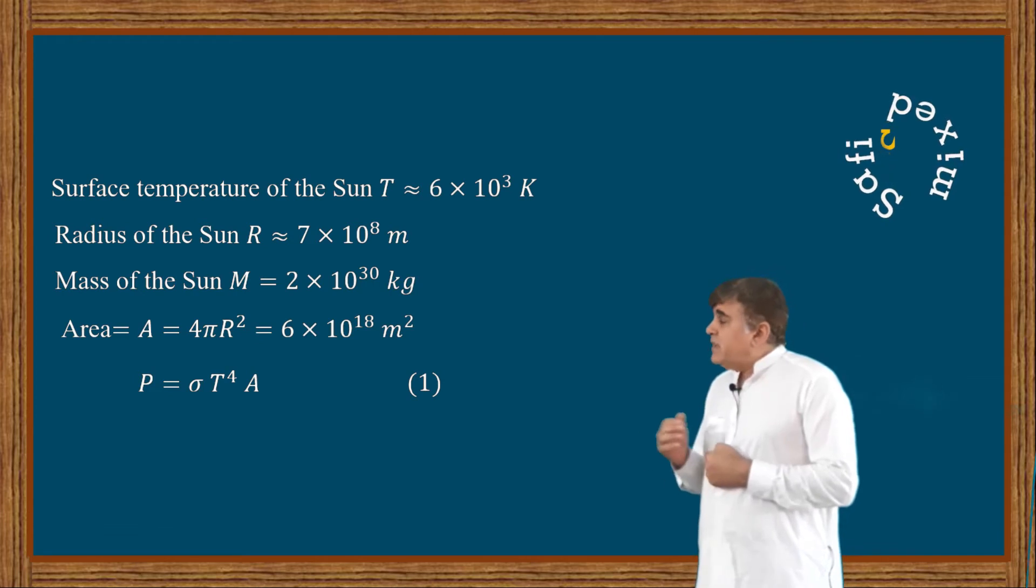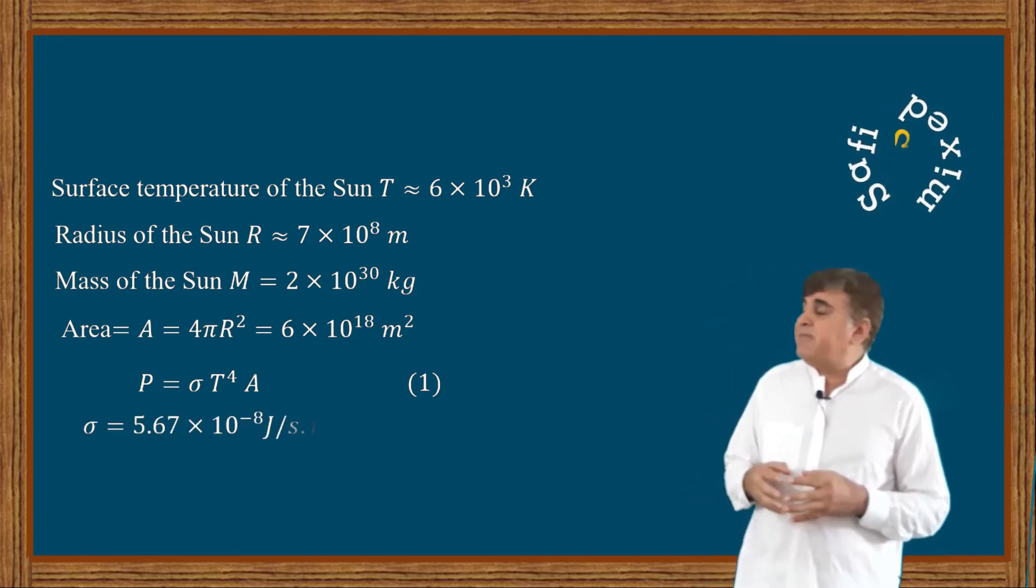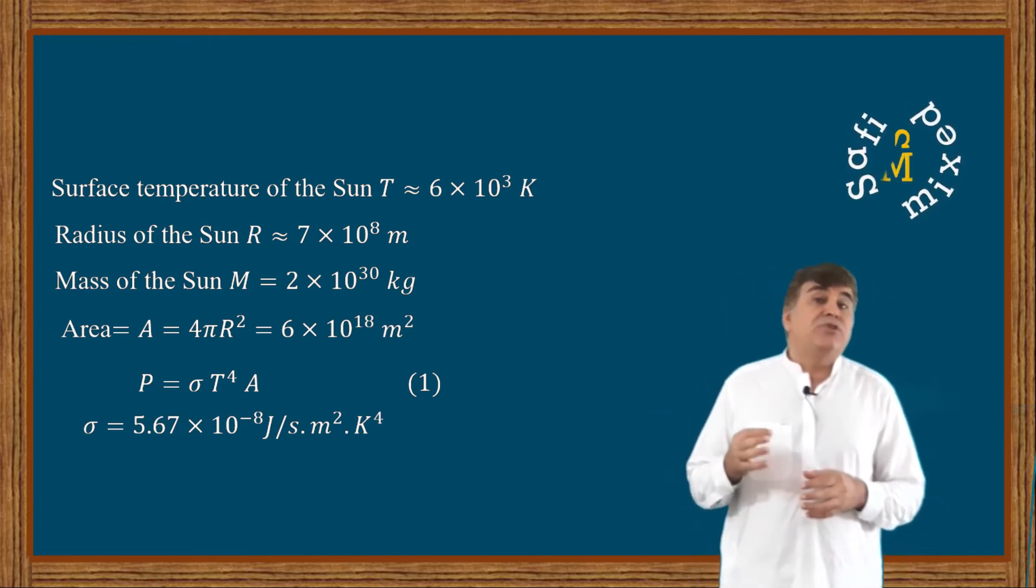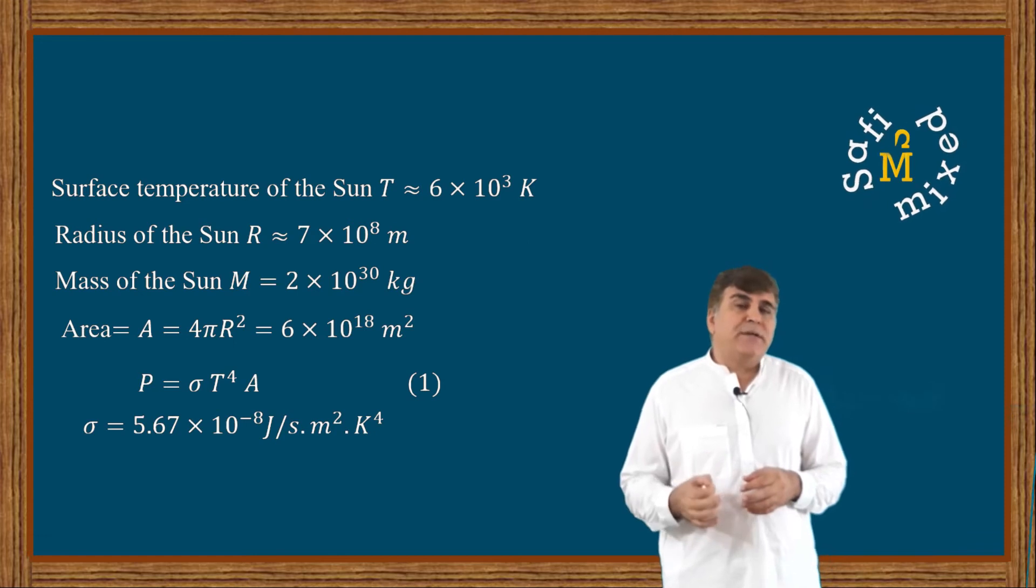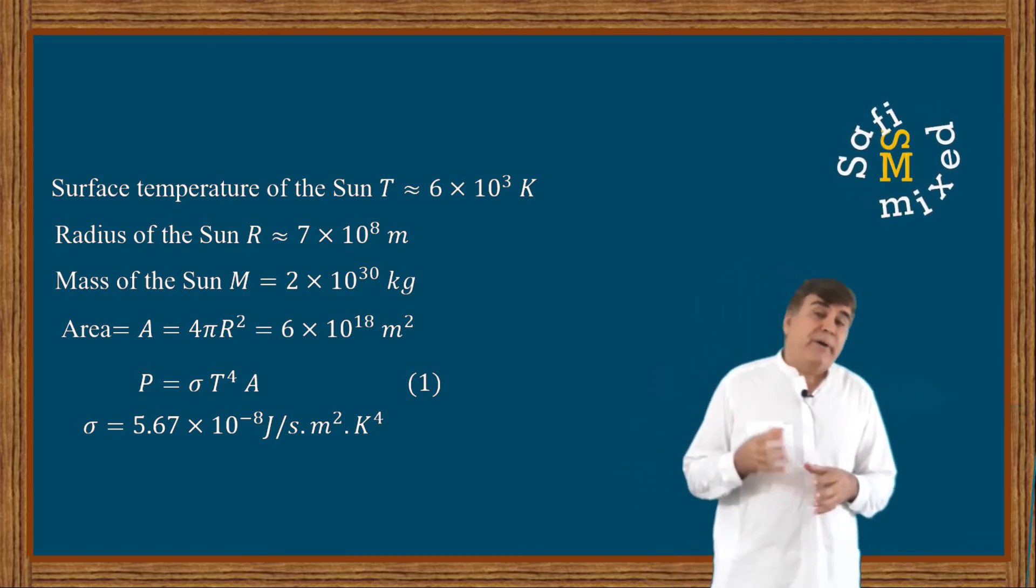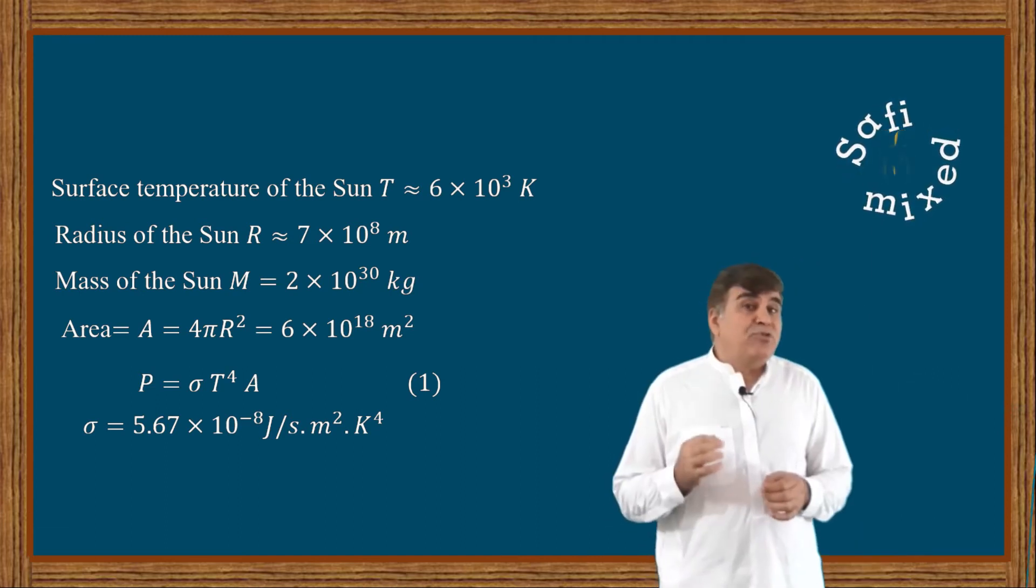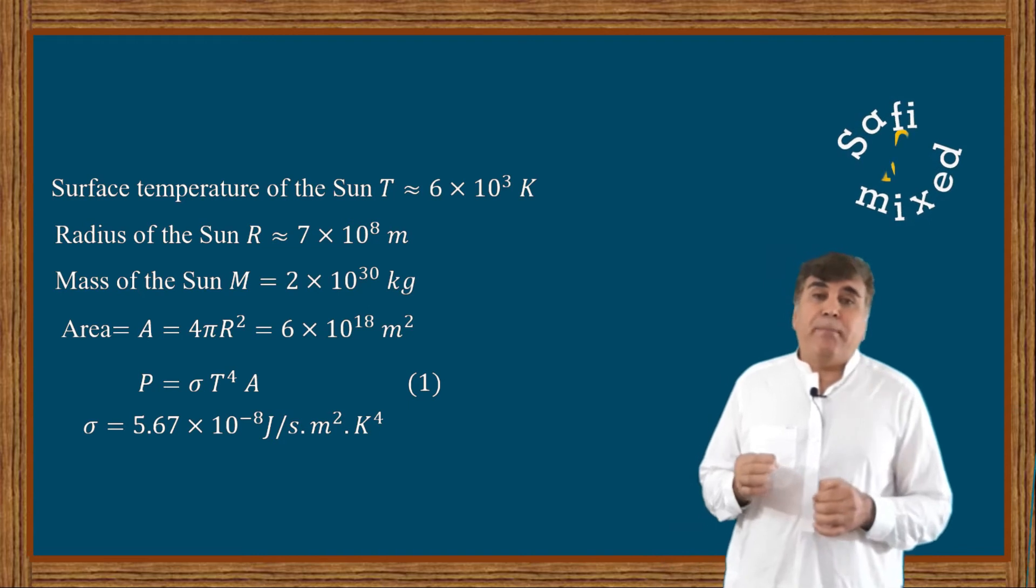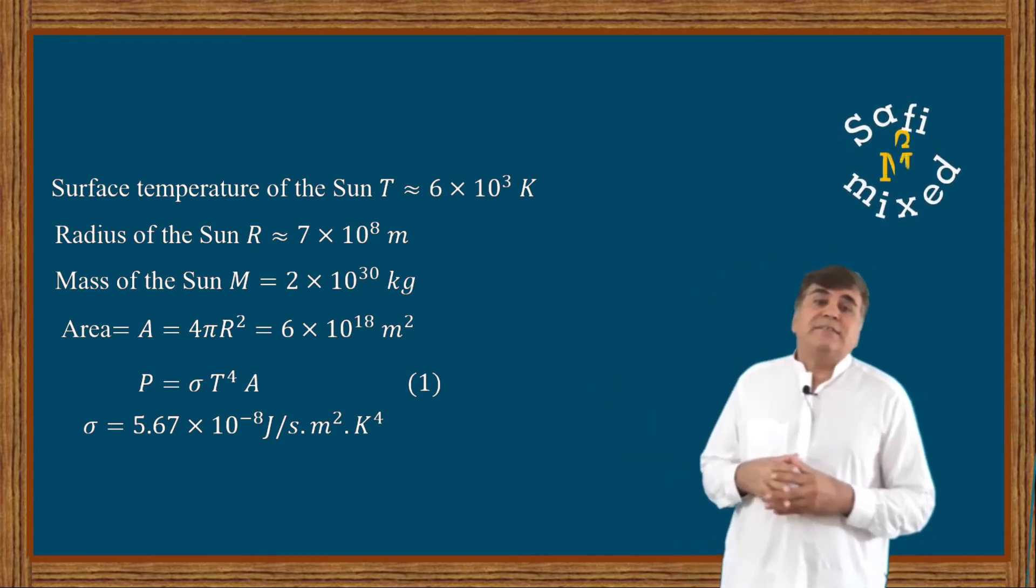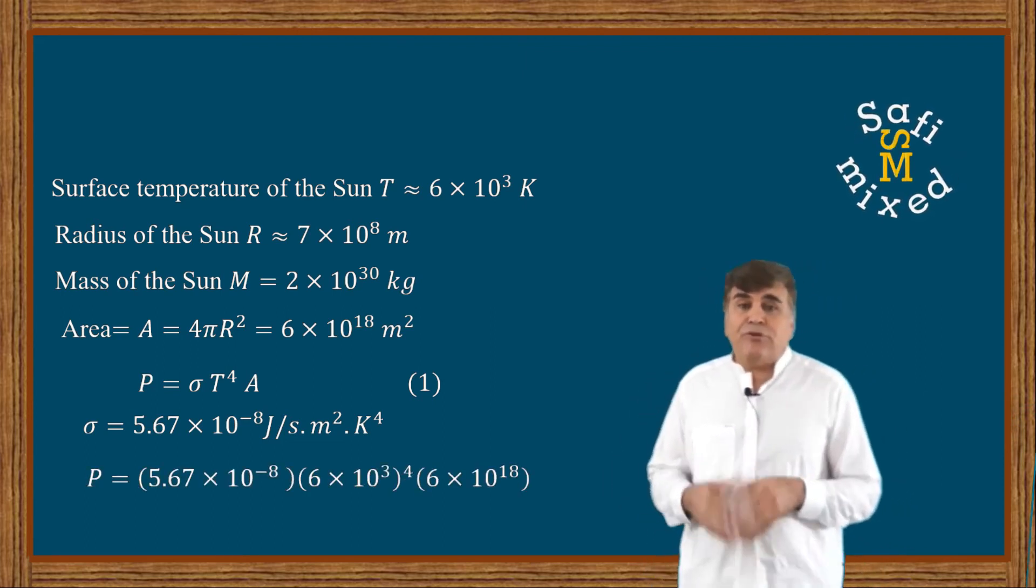Substituting the values from the above data into equation 1, we can write that the power P equals 4 × 10²³ kW.